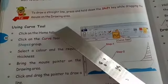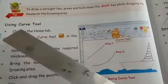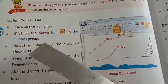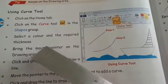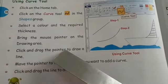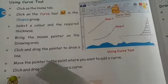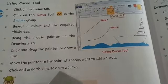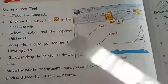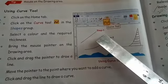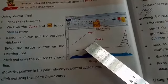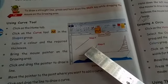Next point is curve. Using the curve tool: click on the home tab, click on the curve tool in the shapes group, select a color and the required thickness, bring the mouse pointer on the drawing area, click and drag the pointer to draw a line, move the pointer to the point where you want to add a curve, then click and drag the line to draw a curve.